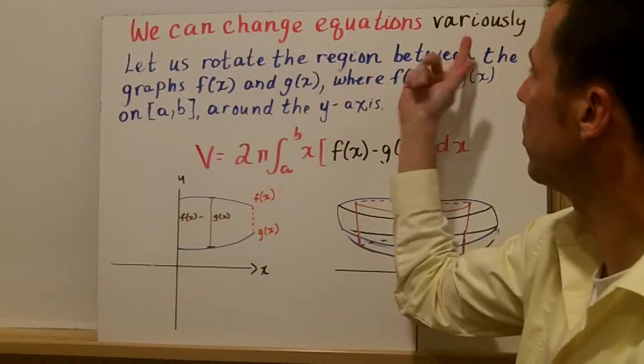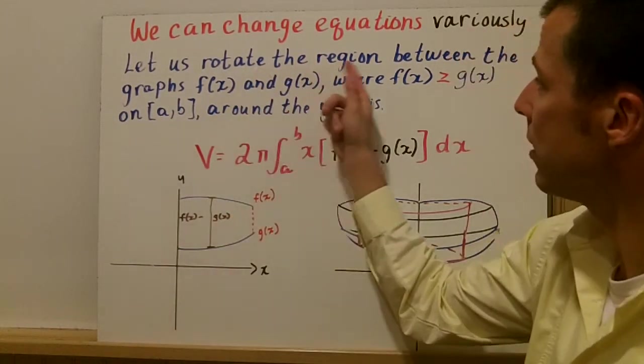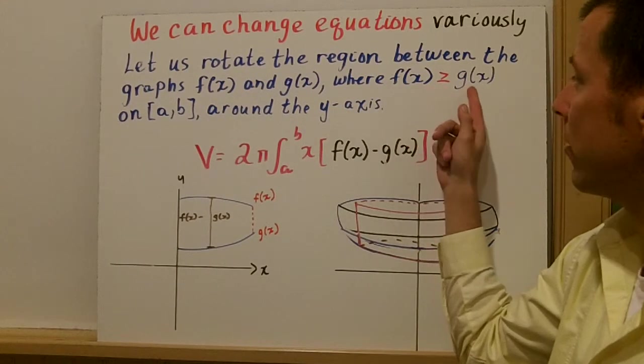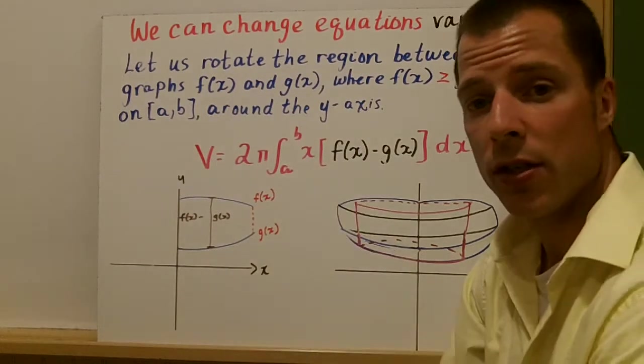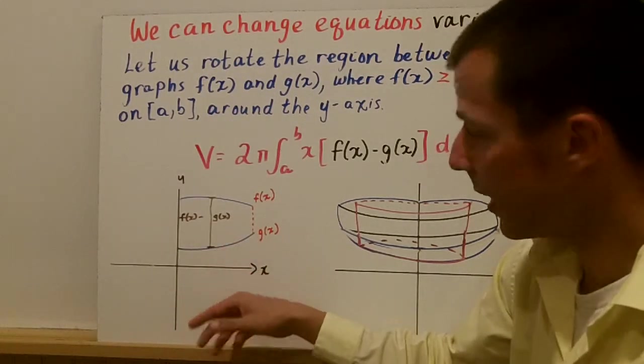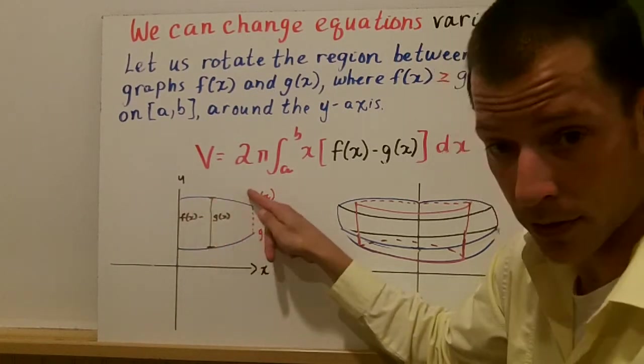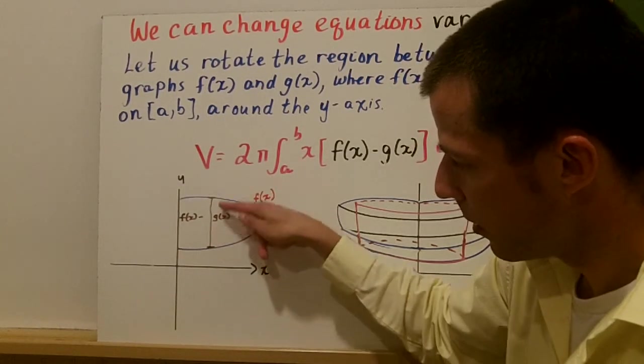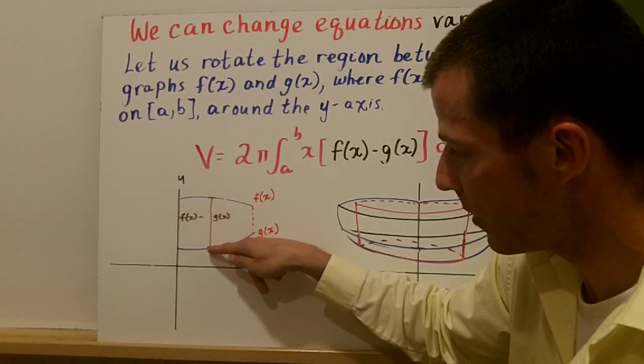We can change equations variously, and what it means really is that we're going to add here, we're going to have 2 functions now. We're going to rotate the region between the graphs f(x) and g(x) now, where f(x) is going to be greater than or equal to g(x) on this certain interval around the y-axis. Graphically, here's your f(x) function, it's larger over an interval, the y values are larger. Then here's g(x) on the bottom here. The height of this shell is really f(x) minus g(x). Whatever this value is minus this value gives you that height.